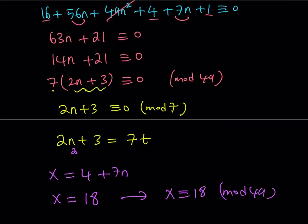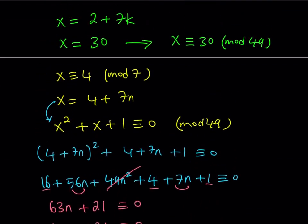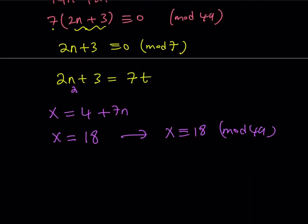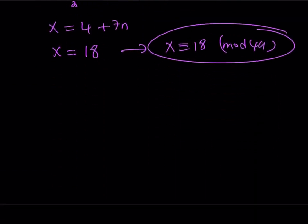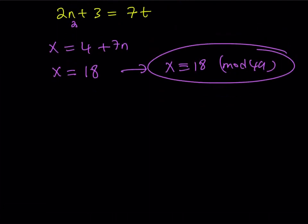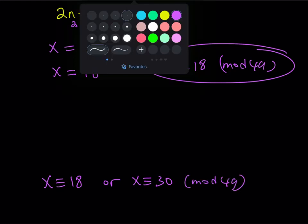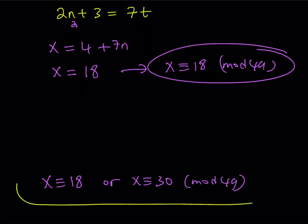So to keep a long story short, we have two solutions. One of them is this one, and the other one is this one. Let's go ahead and put it together. And that way, we're going to be getting our solution set. So x is either 18 or x is 30 (mod 49). And this brings us to the end of this video. Well, thank you for watching. I hope you enjoyed it. Don't forget to comment, like, and subscribe. I'll see you tomorrow with another video. Until then, be safe. Take care. And bye-bye.